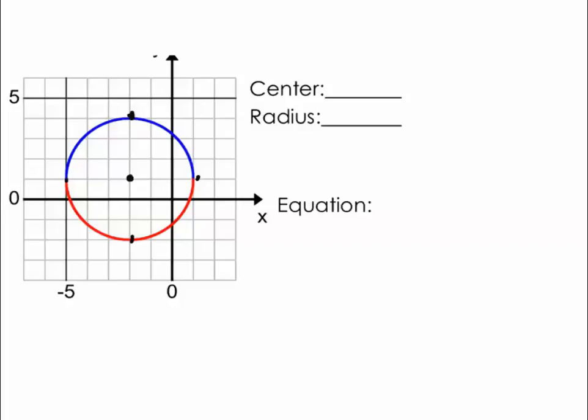So then you want to find what that ordered pair is. Just be real careful because the way these pictures are cut, the origin is not always in the center, and you want to make sure that you're counting in the correct direction. So this point is actually left 2 and up 1. So my center would then be the ordered pair negative 2, 1.